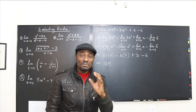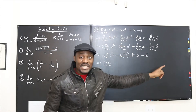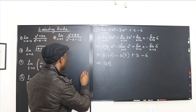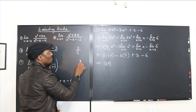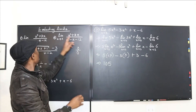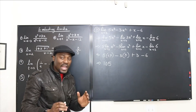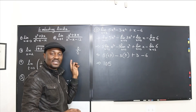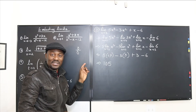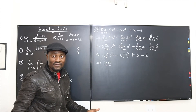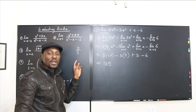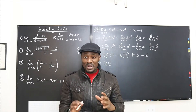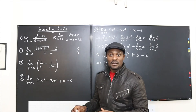The only time there's going to be a problem substituting the number straight into your limit is if you end up with zero divided by zero, especially when you have rational expressions. If you end up with zero over zero, you can't write that because it's meaningless — this is the indeterminate form. You can't have zero over zero.